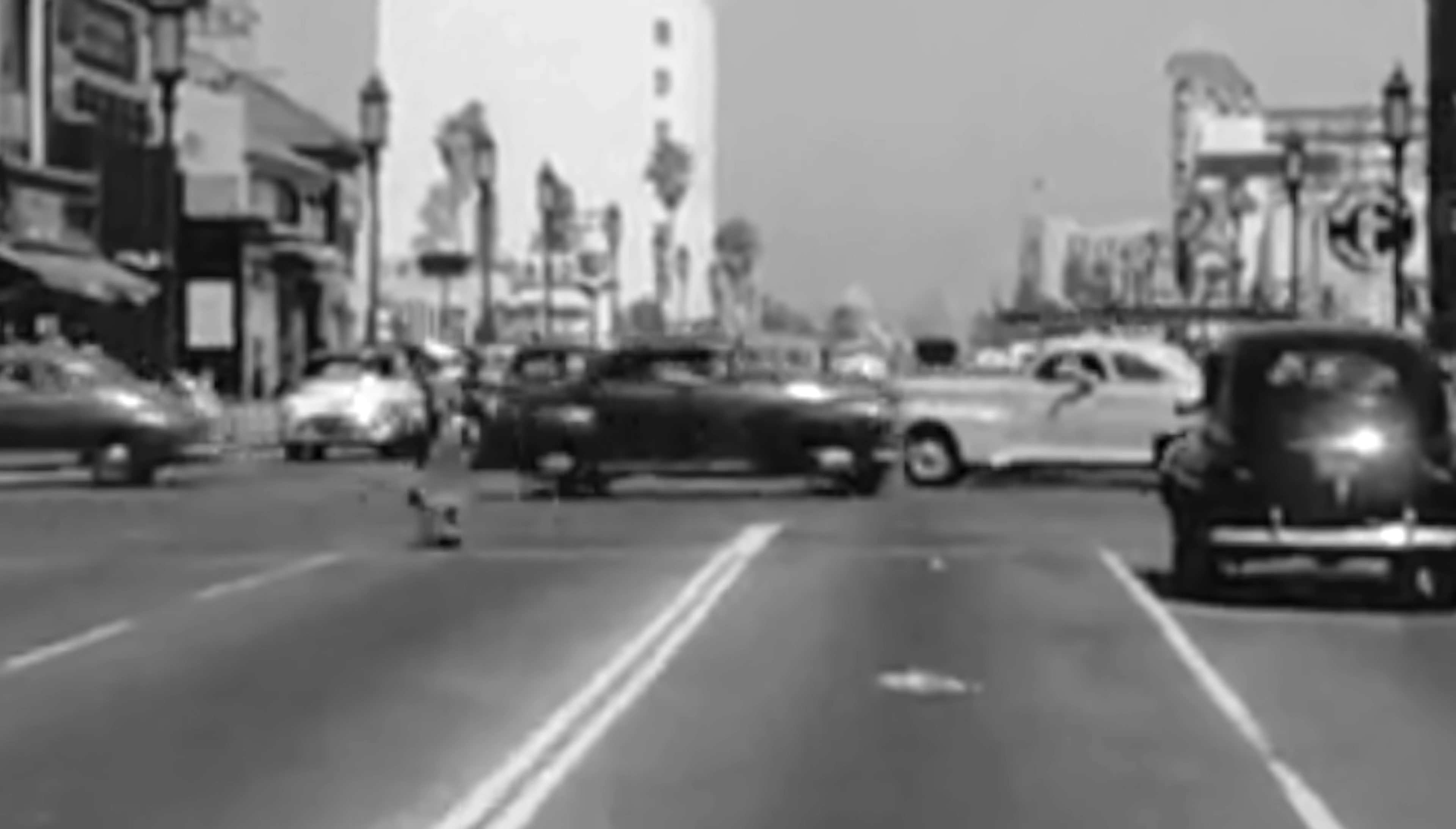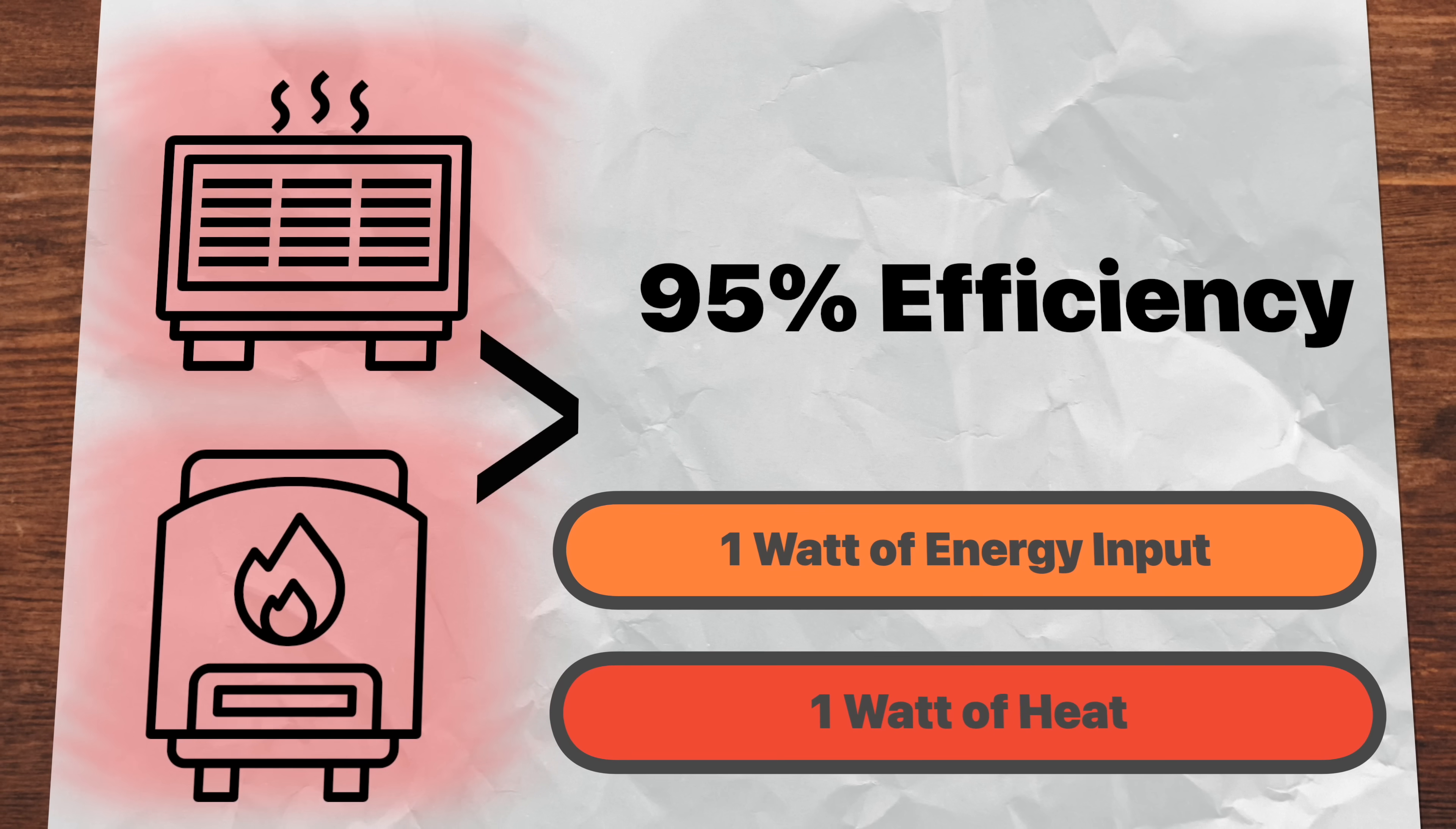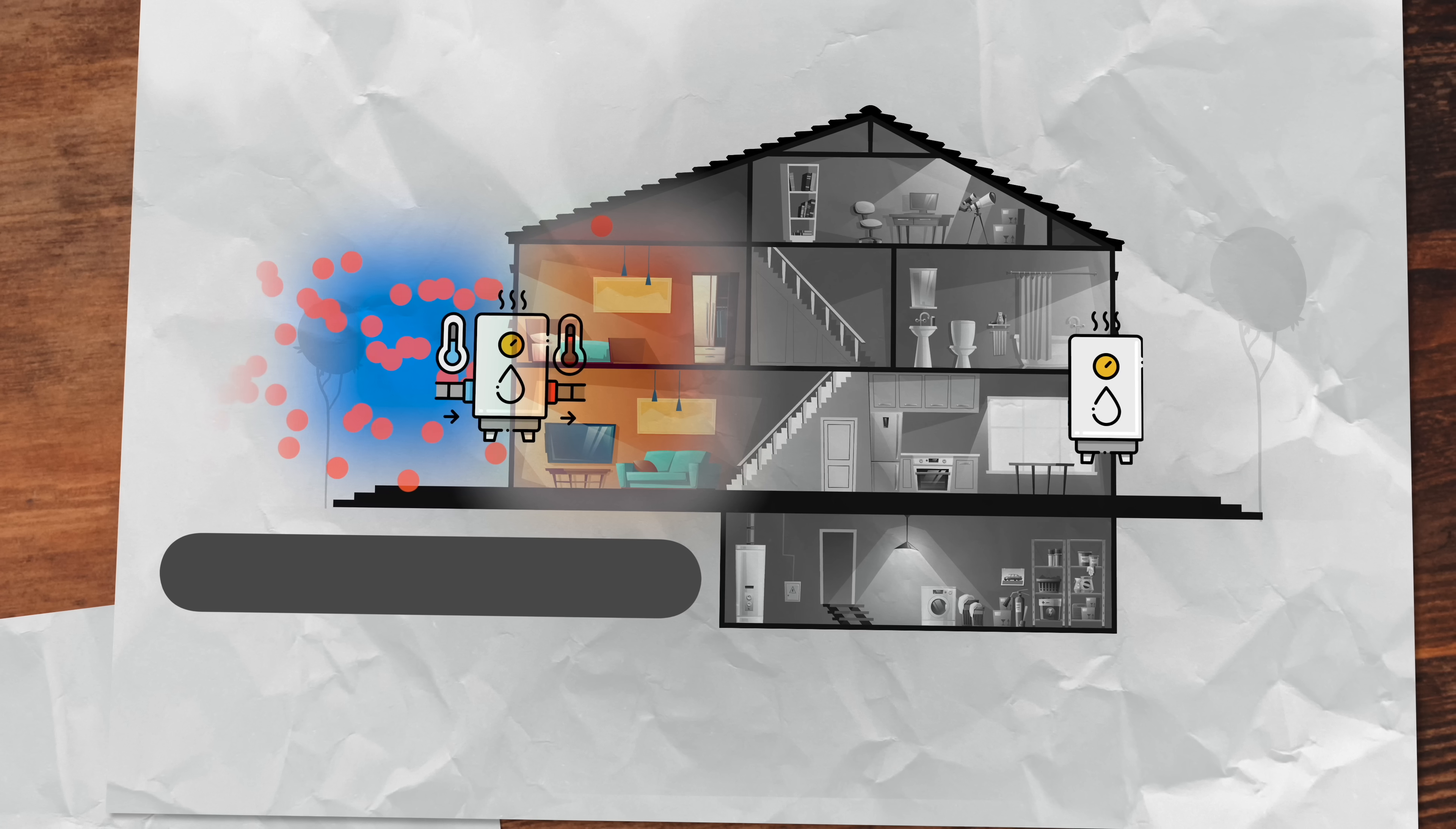The real magic of the heat pump is twofold. First, they're really efficient. While an electric or natural gas heater might be upwards of 95% efficient, meaning one watt of energy used will produce roughly one watt of heat, heat pumps are on another level. Because they don't actually create heat, but pump heat from one location to another, they have a coefficient of performance of between three and five.